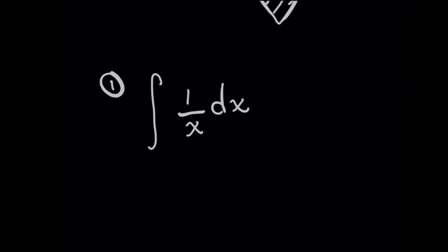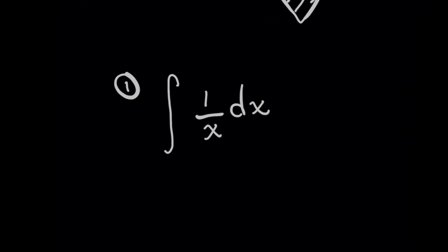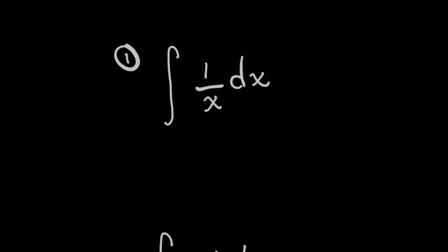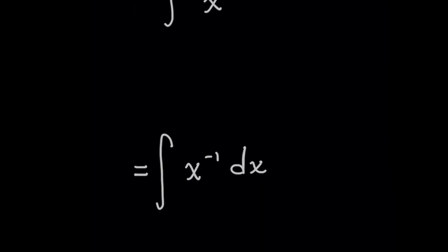For the first problem here, integrating 1 over x dx will have many students rewriting this expression as a polynomial. And the problem with this is that when you rewrite it as x to the negative first, you're thinking that you can integrate this just like any polynomial.